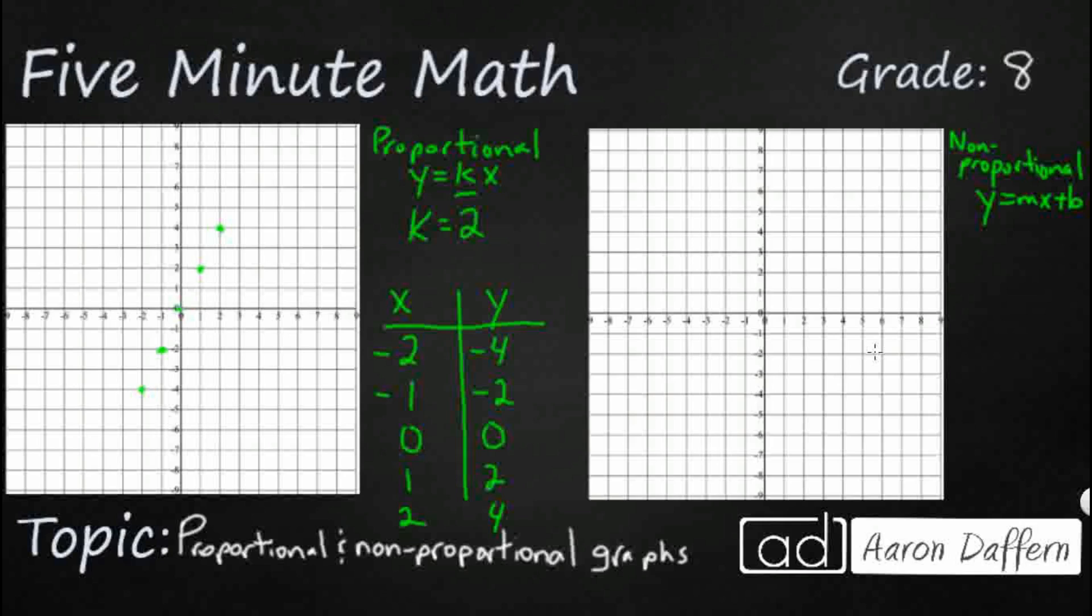Put anything in this form, and you can change this k to anything. You could do negative 100, you can do a decimal like 0.38, you can do 5 eighths as your constant of proportionality. No matter what happens, if you have a proportional relationship, it's going to go through the origin.